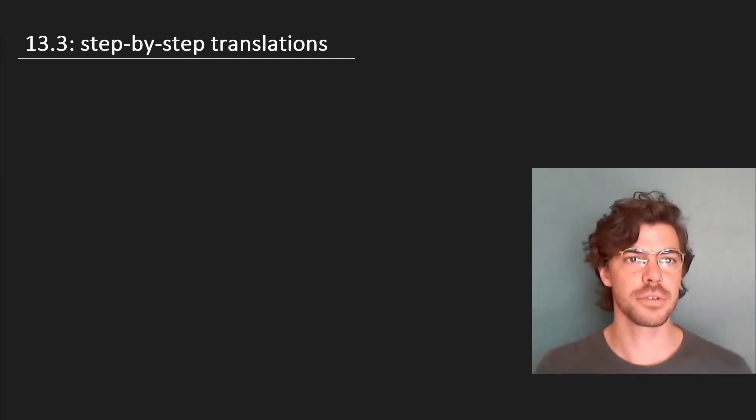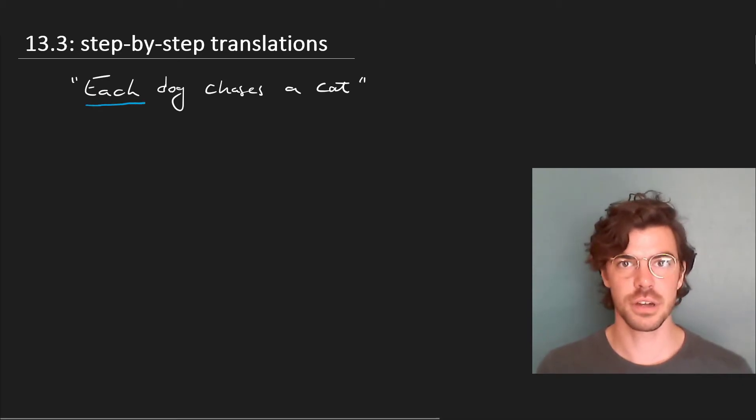Suppose we have the natural language sentence: each dog chases a cat. The first step is to recognize the quantified expressions, of which there are two. One is 'each dog' and the other is 'a cat,' and we already know that these are equivalent with 'all' and 'some.'